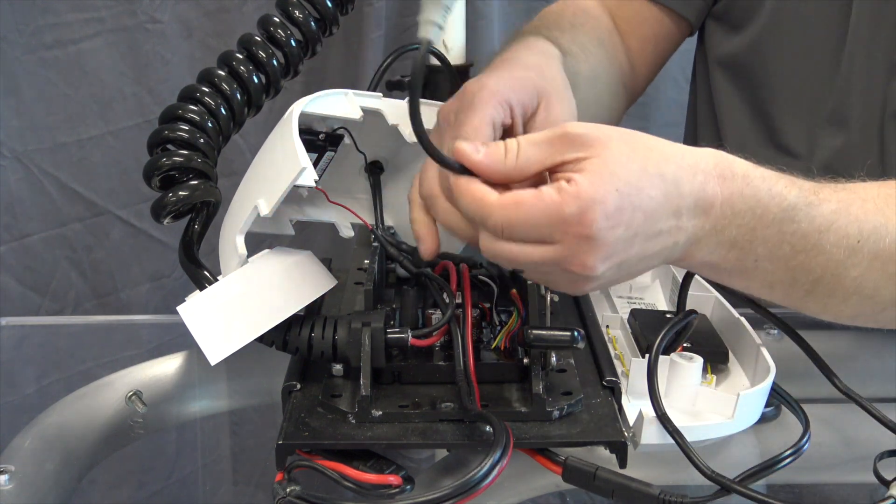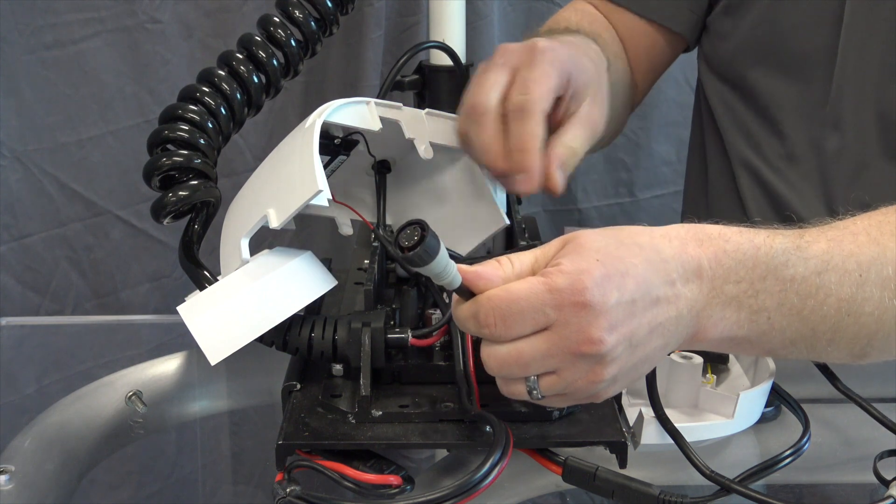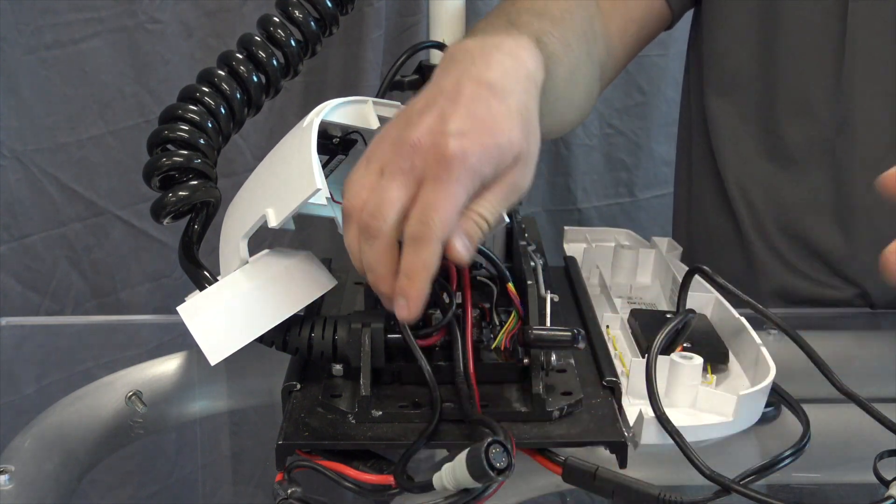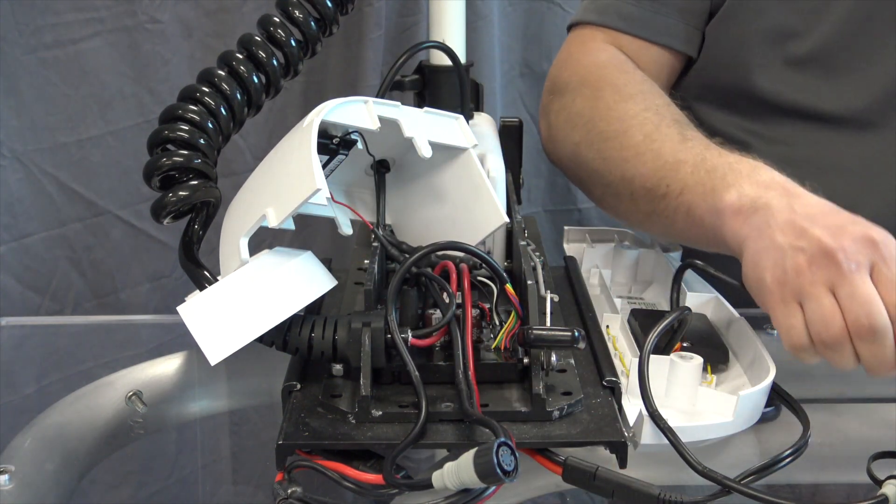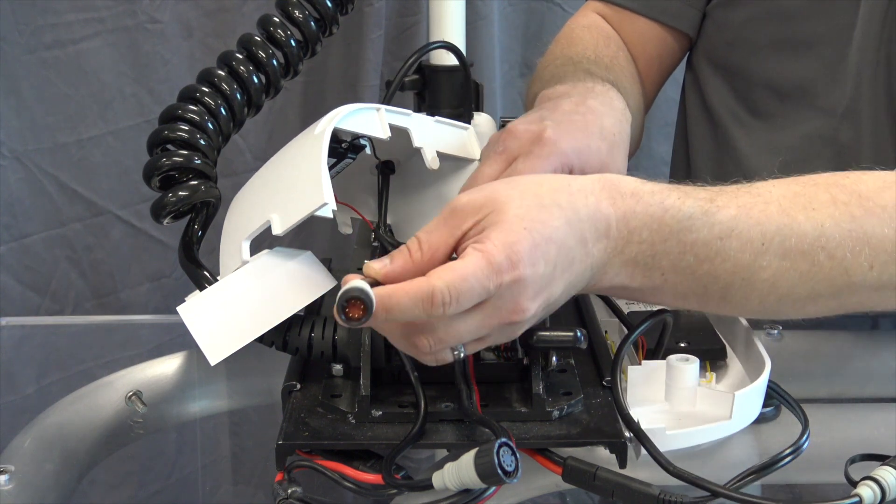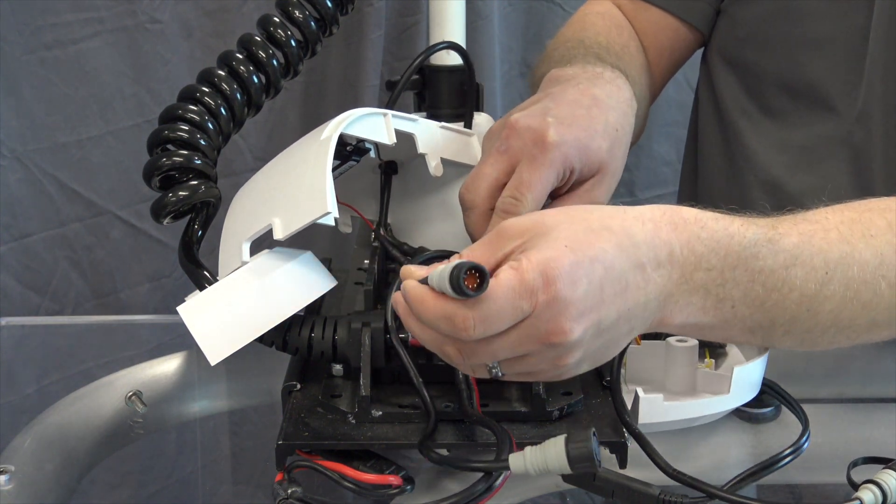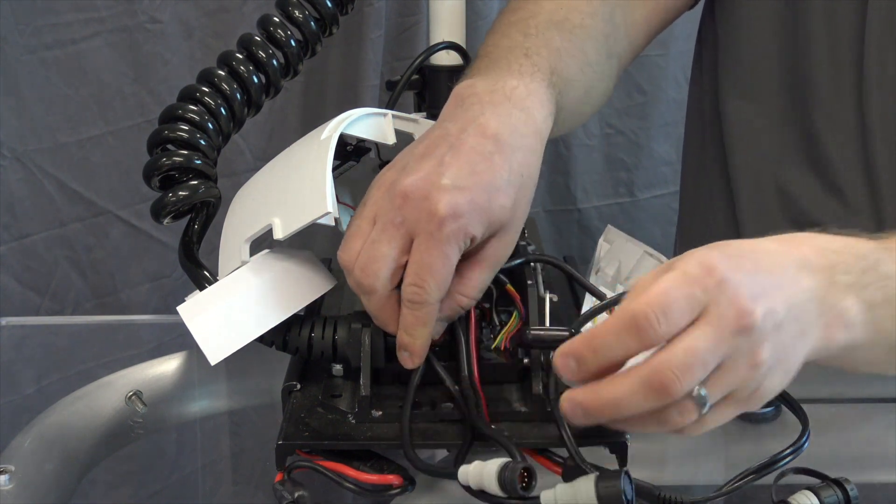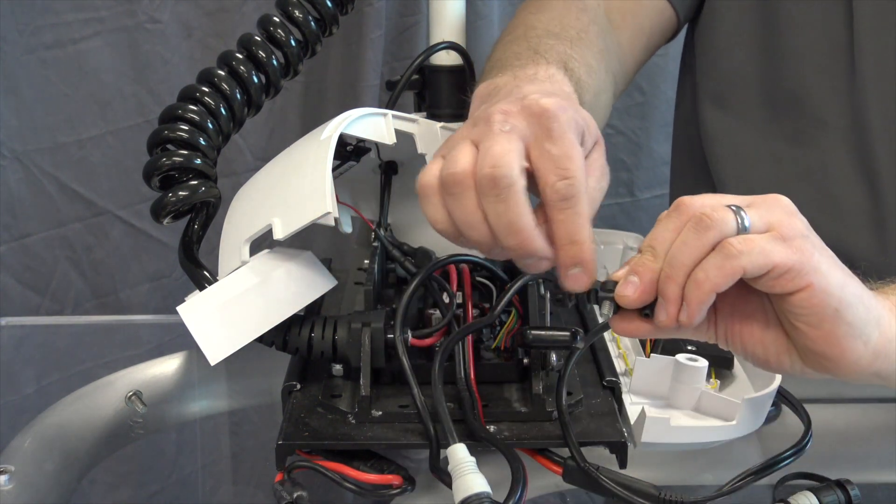The first thing we want to do is take this connector that was previously connected to the Co-Pilot and set it aside. Then we take the opposite connector of the Co-Pilot and run that out as well. You'll see there are two slots on here.